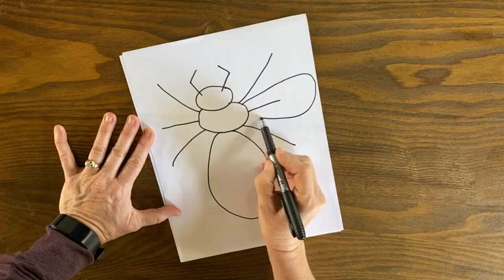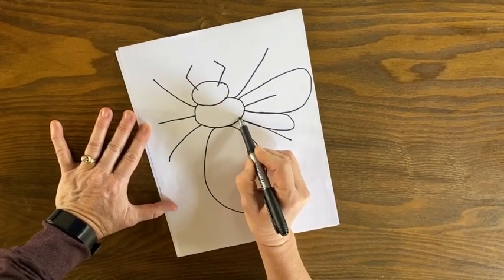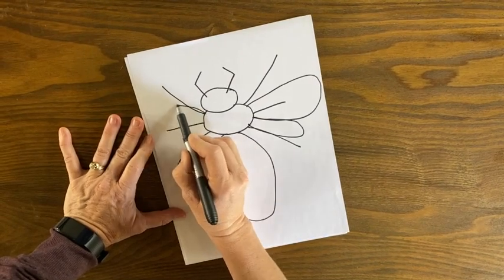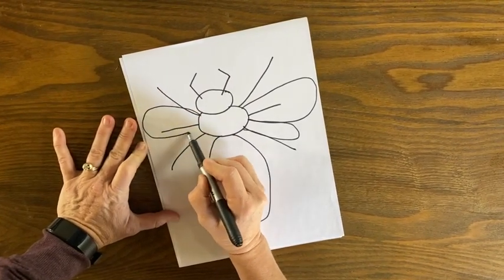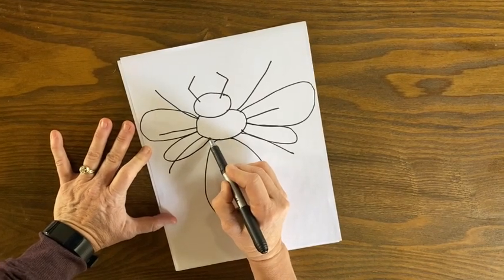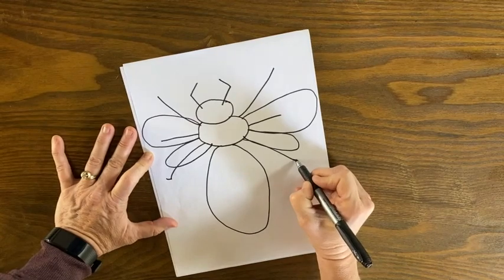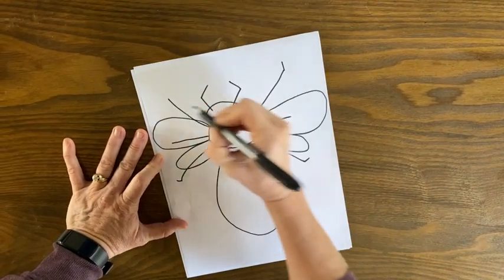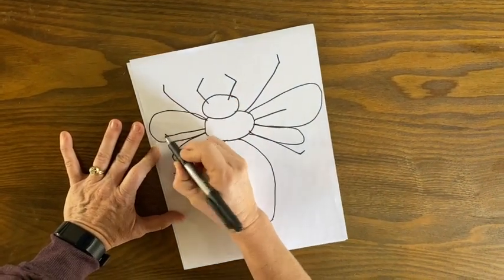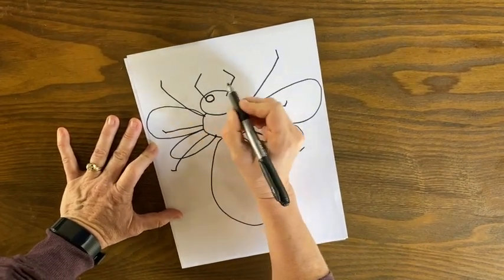What else do we need? Well, this insect needs to be able to see, so I'm going to add two large compound eyes. We'll talk about that later.